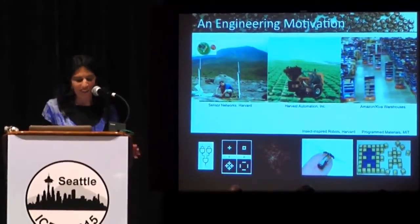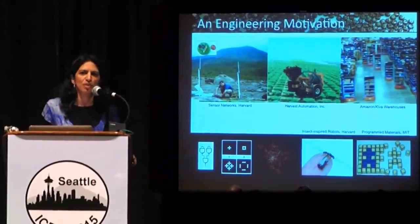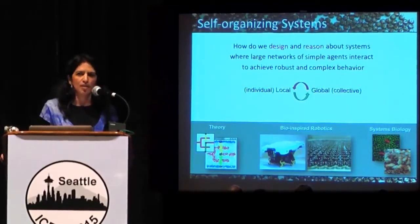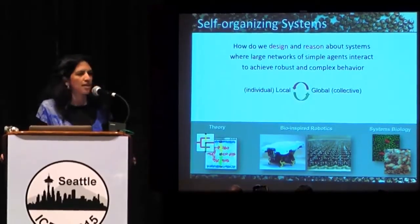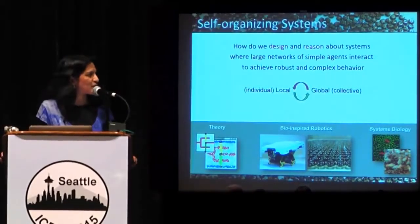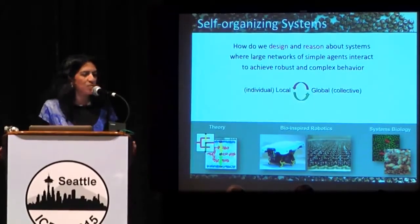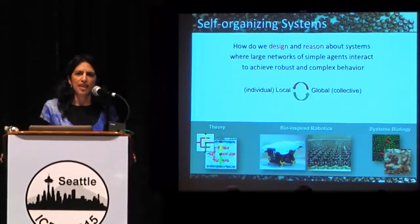For me personally, I'm also really interested fundamentally in how complexity arises from simple agents. That's one of the fundamental things we look at in my research group from many different angles — from a theoretical angle, how do we make abstract systems that can generate complex patterns? We work closely with biologists who study cells and social insects, and we also try to build robotic systems that emulate some of the ideas that excite us about biology.